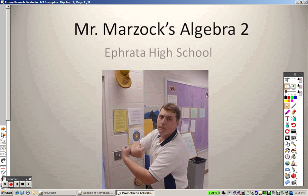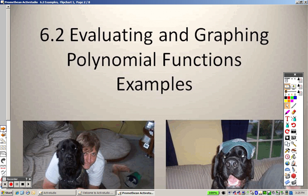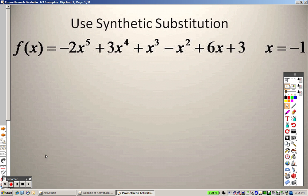All right, here we are on 6.2, and 6.2 is evaluating graphing polynomial functions. So let's take a look here at this problem. This is called synthetic substitution, and they're telling us what negative 1, and basically what they really mean is take negative 1 and plug it in for x everywhere.